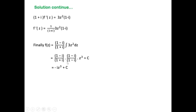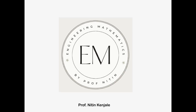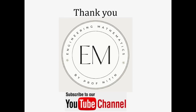This is the required analytic function for the given u - v. I hope you understood how to find an analytic function f(z) = u + iv whenever the sum or difference of its real and imaginary parts is given. Thank you for watching this video. Please subscribe to my YouTube channel for more engineering mathematics videos and press the bell icon to get notifications about my videos.